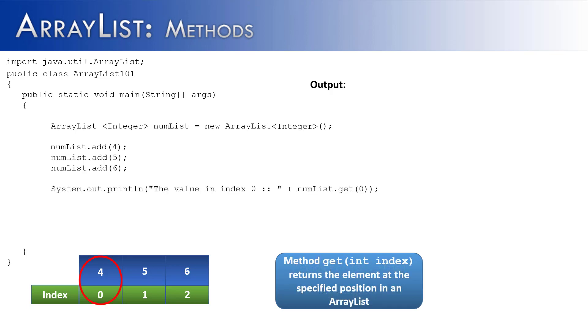The second method that we're going to look at is called the get method. We're going to get the value in the 0th index. So we say the value in index 0 is numList.get(0). Notice you get the value not by searching for the value itself, you're not searching for 4, you're searching for the index. So you say 0, and it pulls whatever is in that index out, and the value in index 0 is 4.